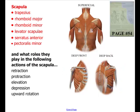Quick review on page 54: trapezius, rhomboid major, rhomboid minor, levator scapula, serratus anterior, and pectoralis minor — responsible for retraction, protraction, elevation, depression, and upward rotation. Have a good day, and good luck on your quiz.